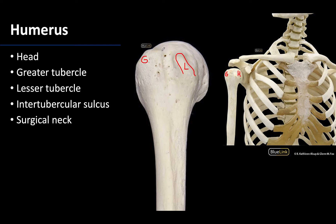Between the greater and lesser tubercles is a long but slender depression called the intertubercular sulcus, sometimes referred to as the bicipital groove. This is because the proximal tendon of the long head of the biceps brachii muscle will be located here.